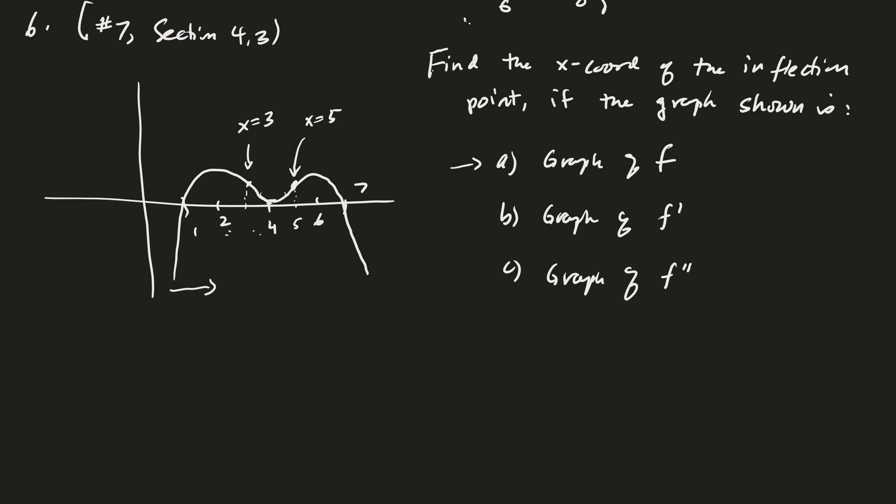Good. And so, yeah, so far those would be the only two, right? Because then the curve is concave down for the rest of the graph. Good. So x equals 3 and x equals 5 would be here.